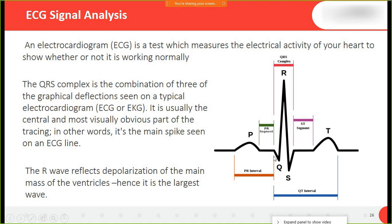This is a QRS complex — Q, R, and S wave. The QRS complex is the combination of three graphical deflections seen on a typical electrocardiogram, also called ECG or EKG. It consists of a P wave, Q, R, S, and T wave. This spike is a feature used to detect different kinds of heart disease, whether normal or abnormal.